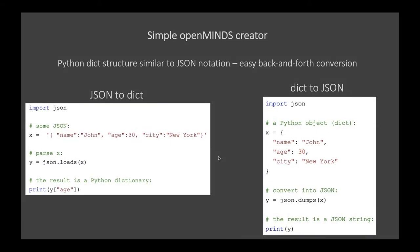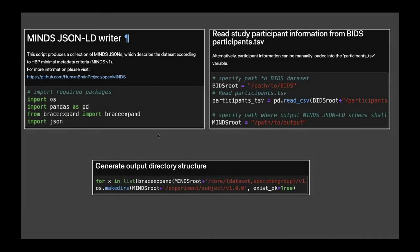When we created this dataset, there was no new software to create such metadata JSON-LD collections. This is our quick and dirty solution to produce metadata for curation. A Python dictionary is very similar to JSON notation, and there is easy back-and-forth conversion with the JSON package from Python. We import JSON, read some metadata from the BIDS data structure from our subjects, and generate directories, create files, and fill them with the required information.